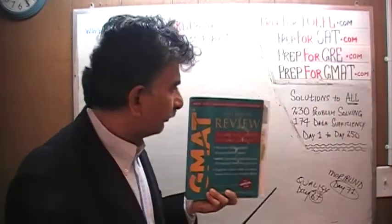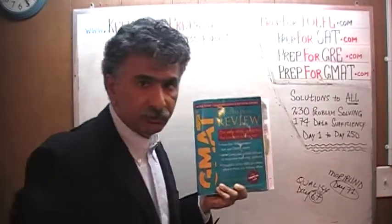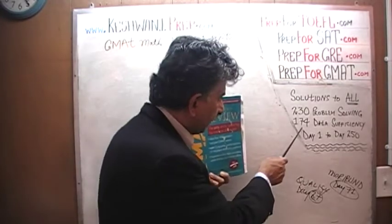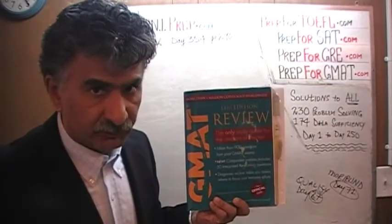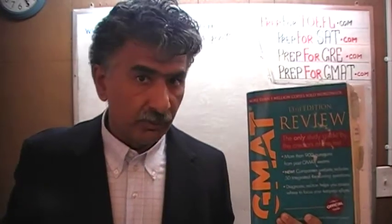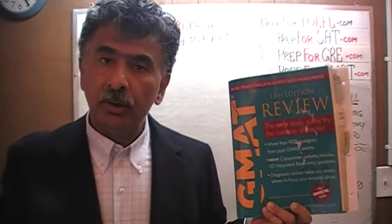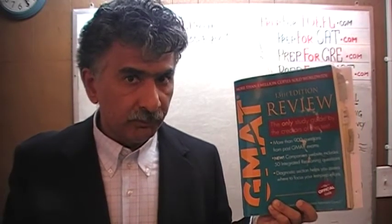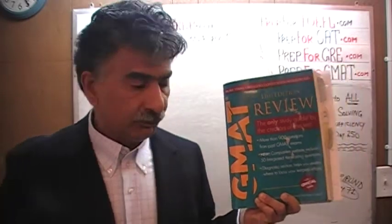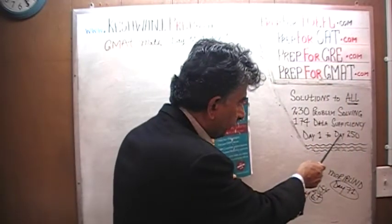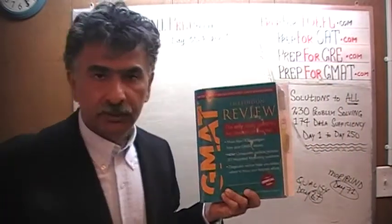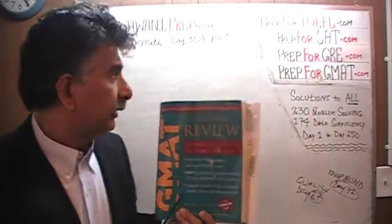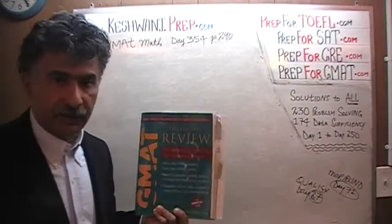The book contains 230 problem solving questions. It contains 174 data sufficiency questions. We have already solved every single math problem from this book. If you are interested in watching any of the original solutions to the problems, you will find the original solutions from day number 1 through to 50. Right now, we are in the process of redoing the problems and we are on page number 290.